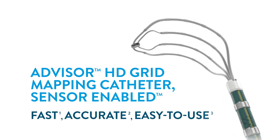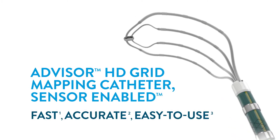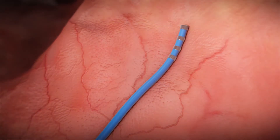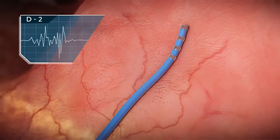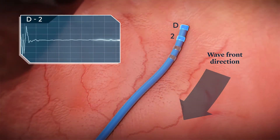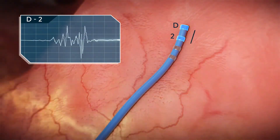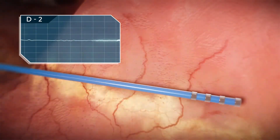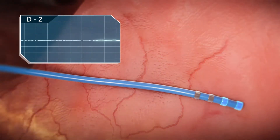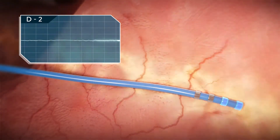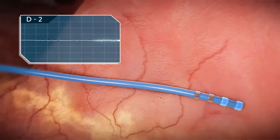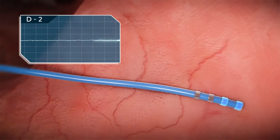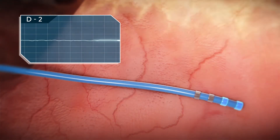When using traditional mapping catheters that only collect data with linear bipoles, the orientation of the catheter relative to the wavefront can make it challenging to correctly assess activation timing and voltage. When the activation wavefront is moving parallel to the electrode pair, the maximum amplitude is recorded. When the wavefront is moving perpendicular to the electrode pair, both electrodes record the voltage at the same time, creating a cancellation — no spike is recorded on the resulting bipolar pair.